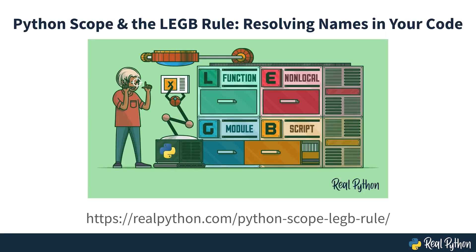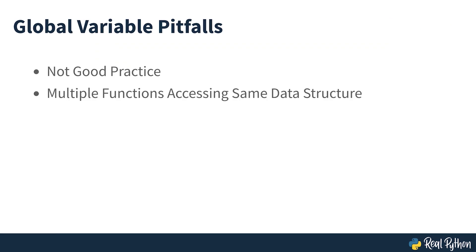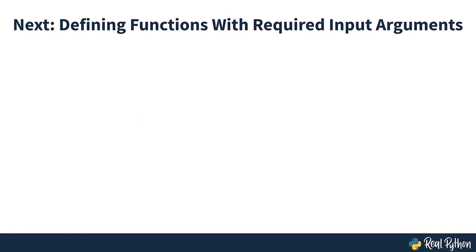You can read more about scope in this Real Python tutorial. Using global variables in this way is not a good practice — it can lead to several functions making changes to the same data structure, which can lead to bugs that are hard to find. You'll see how to improve on this later in this course, when you'll pass the dictionary to the function as an argument. In the next section, you'll define a function that requires an input argument.